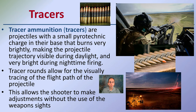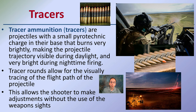Tracer rounds are projectiles with a small pyrotechnic charge at the base that burns very brightly. Even in daytime you can easily see a tracer round when fired, and they're especially useful at night. Not every round is a tracer — typically every fifth or tenth round will be a tracer. This allows you to easily see where shots are being fired at night and make adjustments without using the weapon's sights. The trade-off is that the enemy can also see where those shots are being fired.